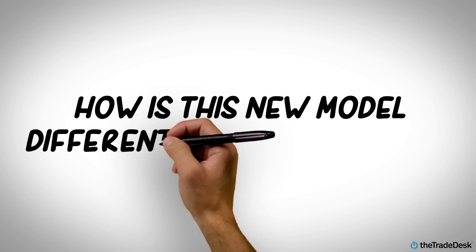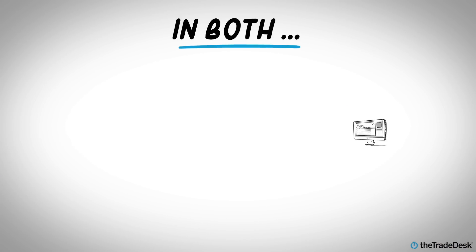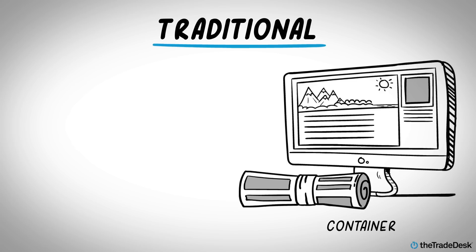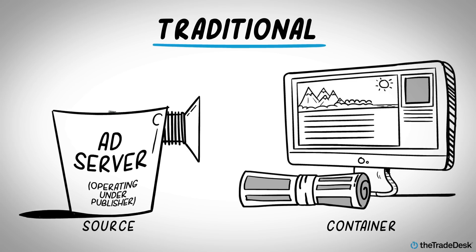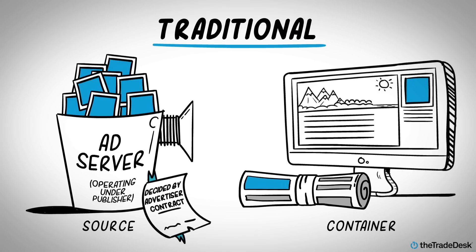How is this new model different from the old one? In both, you start with a container — the place where an ad will be shown. In the old way of doing things, the source for this container would be an ad server operating under a publisher, which would fill the container with whatever ads had been decided on in their contract with an advertiser.